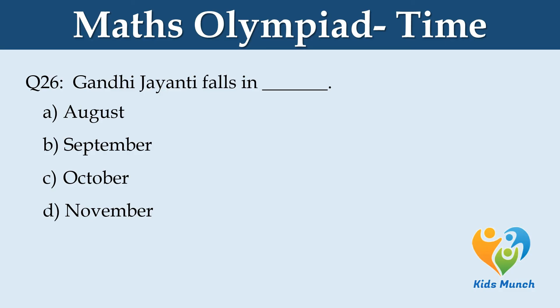Gandhi Jayanti falls in dash. Option A: August. Option B: September. Option C: October. Option D: November.